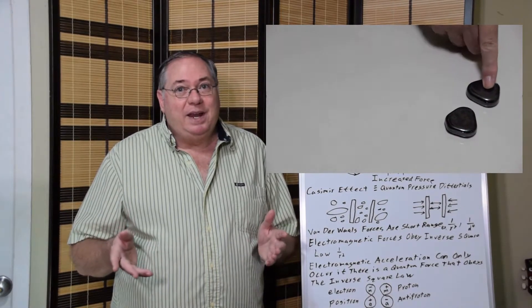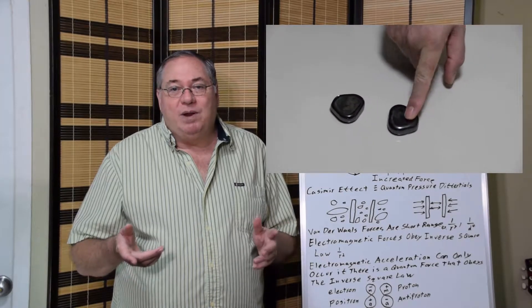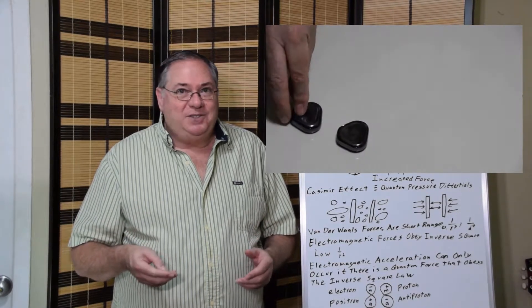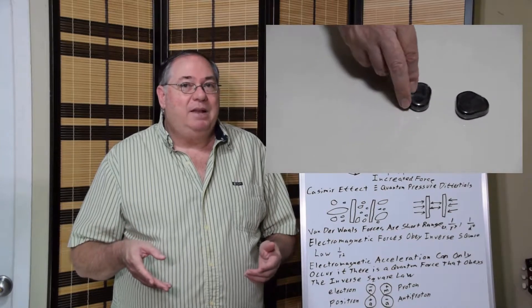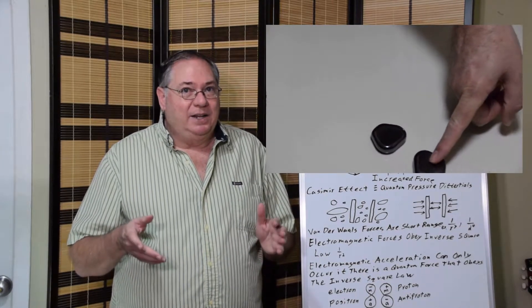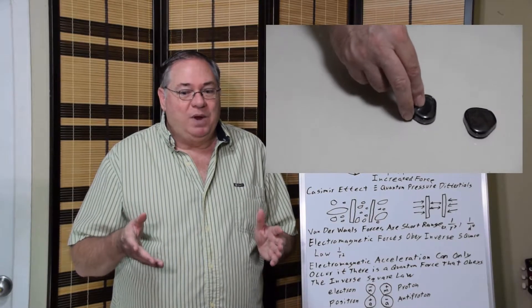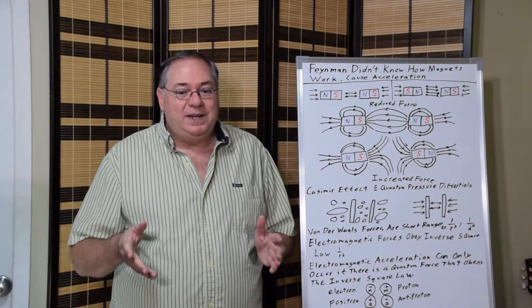And there's only one thing in empty space, the quantum field, quantum fluctuations. And so that is the problem. Feynman and others don't want to say that there's a quantum fluctuation or action happening when that's the only way to explain what's happening.